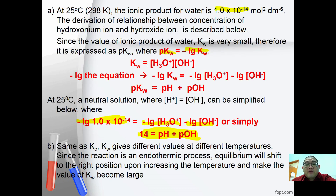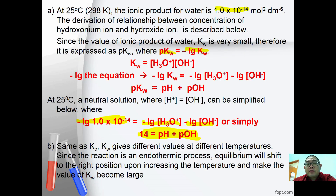Like Kc, Kw gives different values at different temperatures. Since auto-ionization is an endothermic process, higher temperature will favor the equilibrium position to the right, and therefore more water will be dissociated.